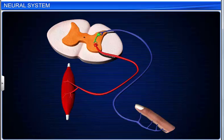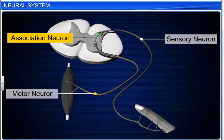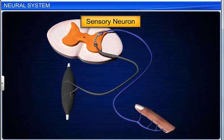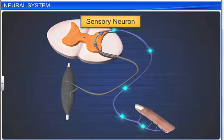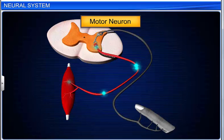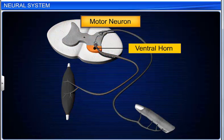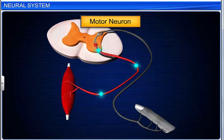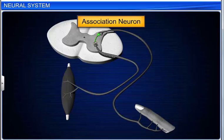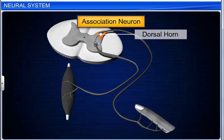On the basis of the functions of neurons, they can be divided into three types: sensory, motor, and association neurons. Sensory or afferent neurons are found in the sense organs; they receive impulses from receptors and direct them towards the central nervous system. Motor or efferent neurons are found in the central nervous system, for example in the ventral horn of the spinal cord, and carry impulses from the central nervous system to organs such as muscles and glands. Association neurons, also called interneurons or mixed neurons, are found in the central nervous system — for example, the dorsal horn of the spinal cord — and interlink the axon of a sensory neuron with the dendron of a motor neuron.